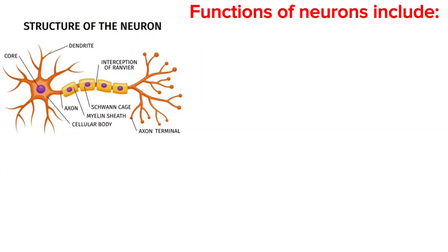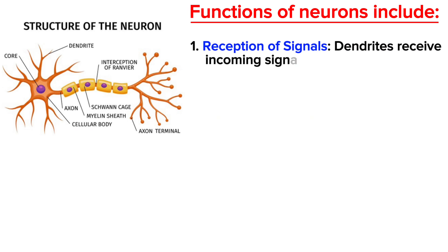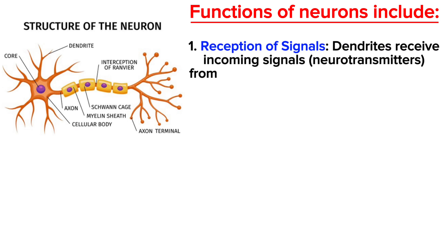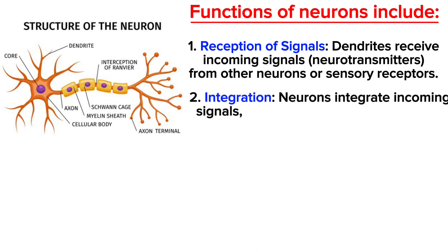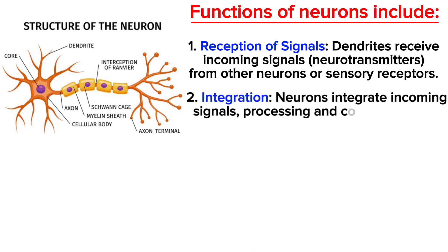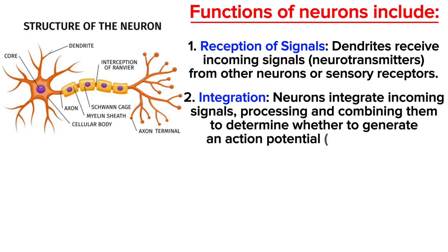Now let's cover the functions of neurons. The first function is reception of signals — dendrites receive incoming signals, also known as neurotransmitters, from other neurons or sensory receptors. The second function is integration — neurons integrate incoming signals, processing and combining them to determine whether to generate an action potential, or nerve impulse.